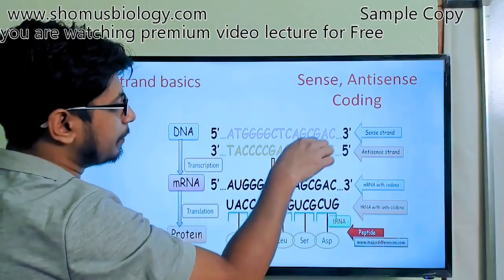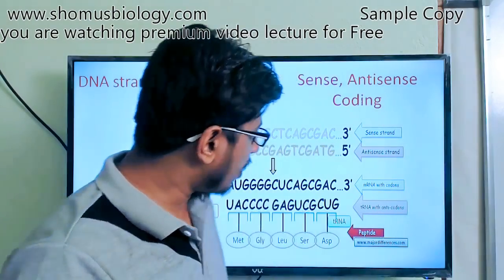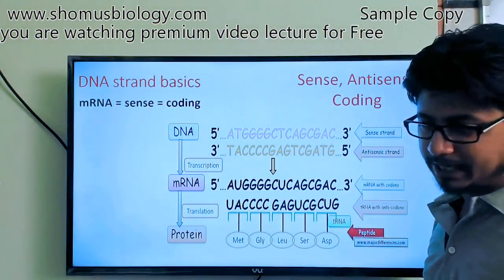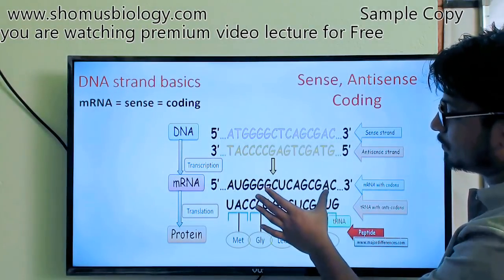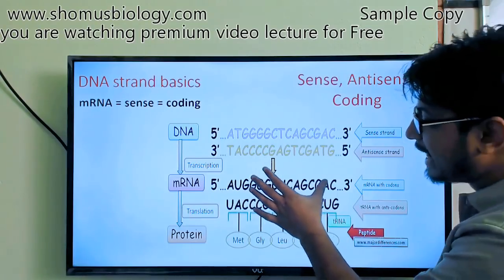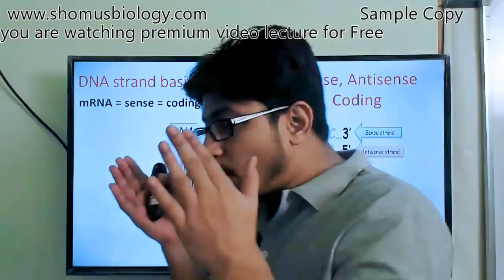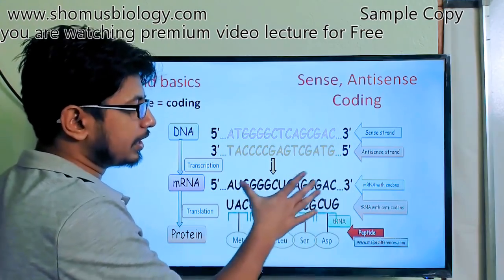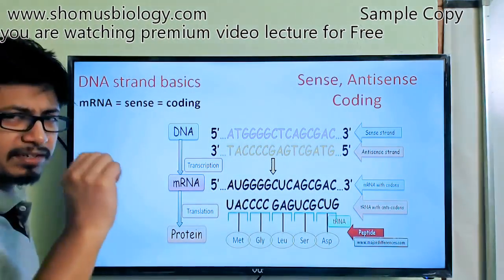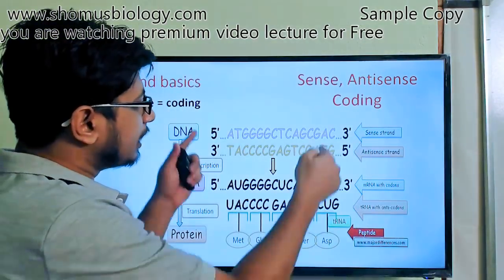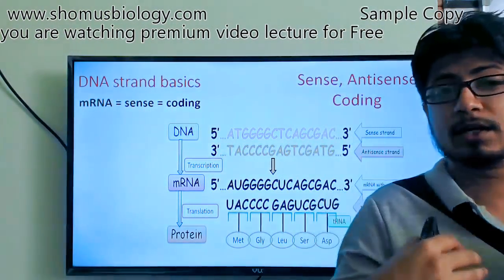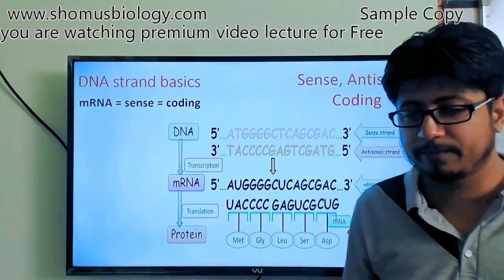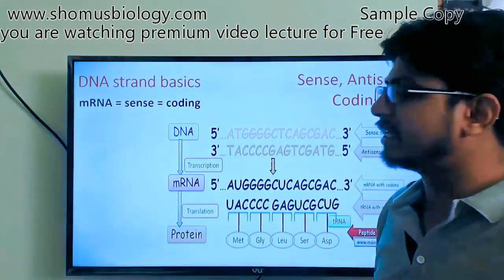The complementary strand to the sense strand is termed the antisense strand. The sense strand is also known as the coding strand, because it produces a sequence identical to the mRNA, and mRNA is translated into proteins. Coding means the strand that contains the codons — three nucleotides in a stretch — recognized by tRNA. So in simple terms: mRNA equals sense equals coding strand. The complementary strand is antisense and also known as the non-coding strand.